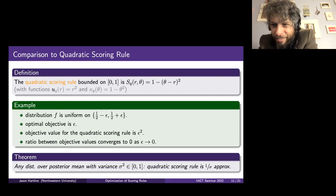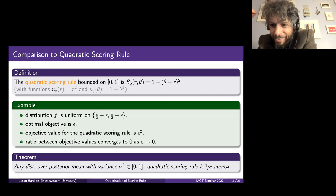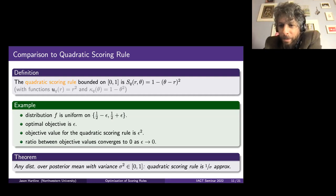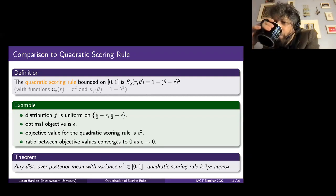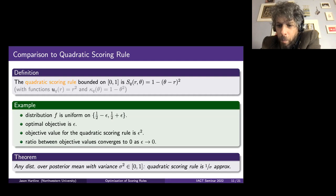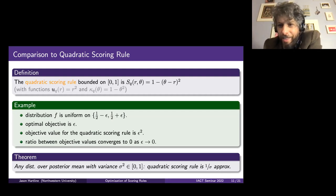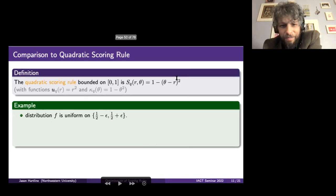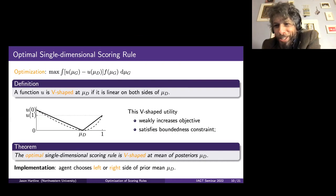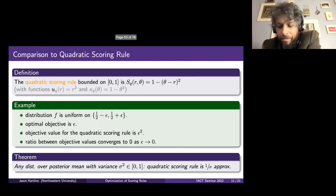The key insight: when epsilon is small, any differentiable function is essentially flat near the prior mean, so you don't get any separation — you don't get anything. You don't want differentiable functions. You do want functions that have a kink. Anything differentiable is not going to work once epsilon is small. The kink is exactly what separates the posterior from the prior, giving you incentive even when signals are weak.